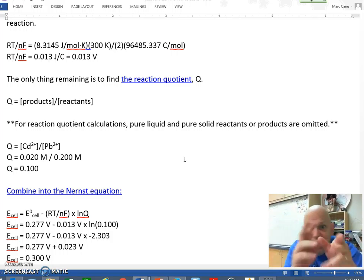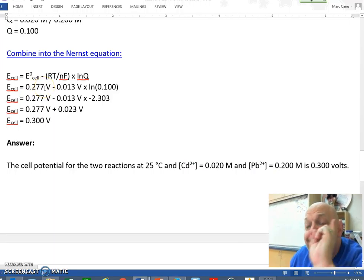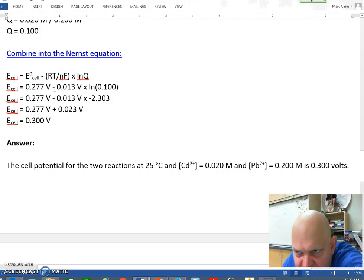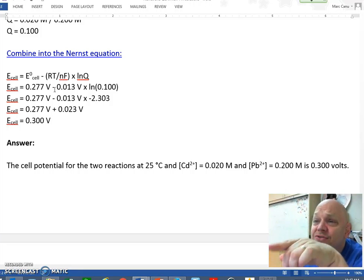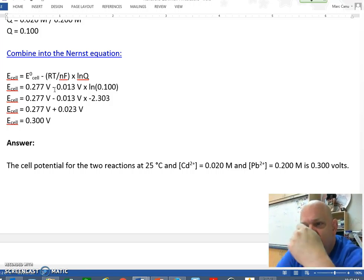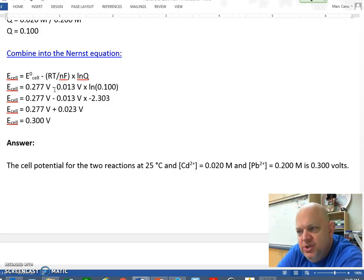Now we can plug all those into the Nernst equation. So let's do it. Combine it. We have 0.277 volts, that was our standard potential, minus 0.013 volts, thanks to RT divided by NF, multiplied by the natural log of 0.1 which is negative 2.303. So 0.277 volts plus 0.023 volts, because a negative times a negative is a positive, and we end up getting 0.3 volts. So our final answer is the cell potential for the two reactions at 25 Celsius. I think they made a technical mistake there. And the cadmium being 0.02 molar and the lead being 0.2 molar is 0.3 volts.